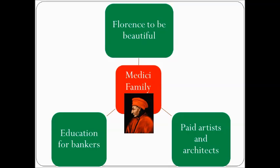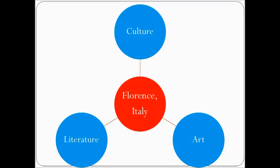There's a family in Florence who is very wealthy — the Medici family. One of their goals is to make Florence the most beautiful city in the world. With their extra money, they pay artists to do sculpting and painting, and pay architects to make the most beautiful buildings in Florence, Italy. They also want their citizens to be educated to work in their banks and produce money. So the Medici, with their extra wealth, kick-start the Renaissance. Florence becomes a center of Renaissance culture, art, and literature.